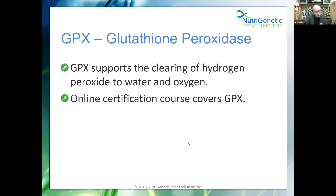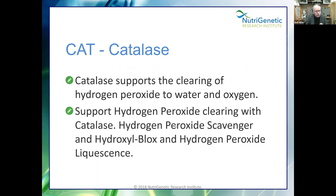Glutathione peroxidase uses glutathione to clear hydrogen peroxide. Our online certification course covers all of that. Catalase supports the clearing of hydrogen peroxide. Recall I was surprised when taking superoxide dismutase made people worse — what we found is you had to support catalase first, or support NADPH or glutathione peroxidase, before giving SOD.